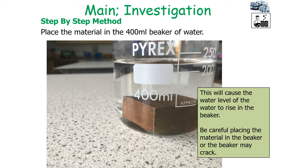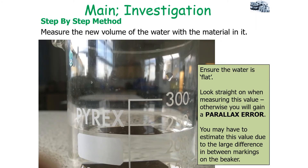You would then place the material in the 400ml beaker of water. This will cause the water level to rise in the beaker — be careful when placing the material in, or the beaker may crack. You would then measure the new volume of water with the material in it, ensuring you're looking straight on when measuring this value, otherwise you'll gain a parallax error.